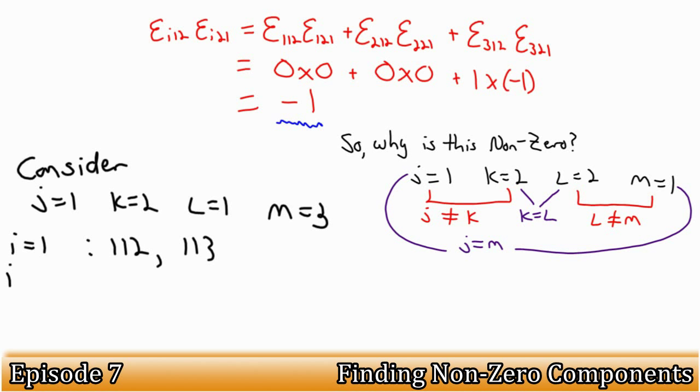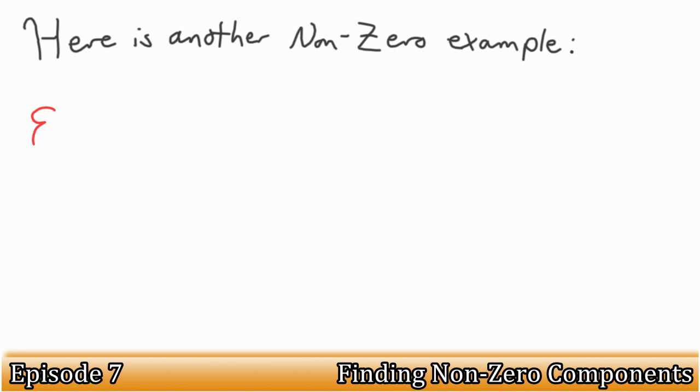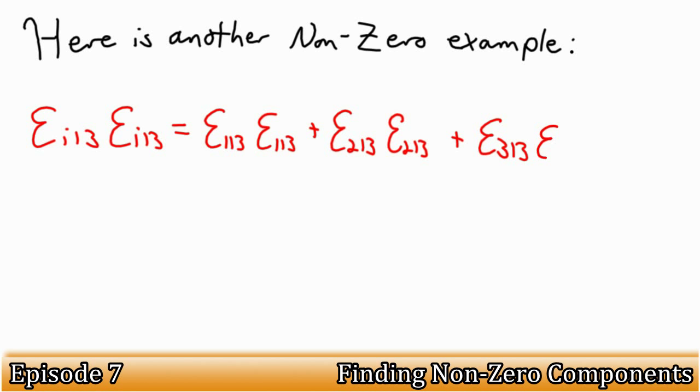It turns out that if j and k equal two different numbers, and l and m equal those two same numbers, then we have a non-zero entry. Why is this? Well, if we have more than two different numbers as the free indices, no term of the cross product will have both epsilon with no repeated numbers, as we can see here. If m is equal to 2, the i equals 3 term would have two epsilon with no repeated index. Here's another example that satisfies a non-zero component. Epsilon i 1 3 epsilon i 1 3 is equal to epsilon 1 1 3 epsilon 1 1 3, plus epsilon 2 1 3 epsilon 2 1 3, plus epsilon 3 1 3 epsilon 3 1 3. This is equal to 0, plus minus 1 times minus 1, plus 0, which is equal to 1.